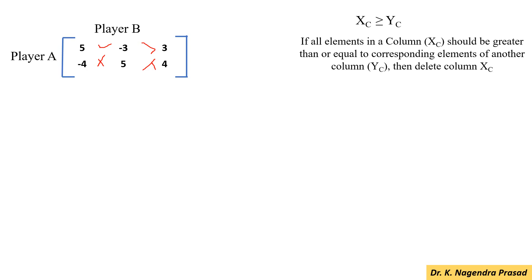Similarly, check the 2nd column elements with the 1st and 3rd columns. First, check the 2nd column elements with the 1st column: minus 3 is not greater than 5. So, the condition is not satisfied. Similarly, minus 3 is not greater than 3. So, the condition is not satisfied.